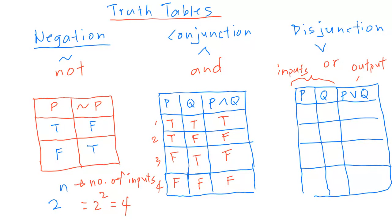Put in the possible combinations: start with the second column, starting with T and alternating T, F, T, F. On the first column, you have T, T, F, F. For disjunction, the output is only false when both statements are false, so only the last row gives F and the rest are true.